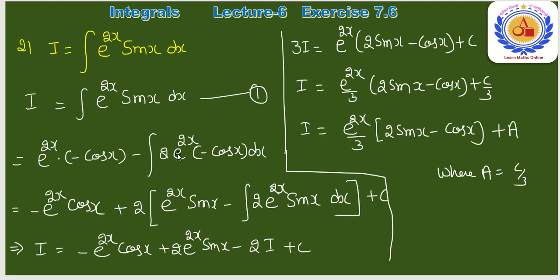I = −e²ˣ·cos x + 2e²ˣ·sin x − 4I। So 5I = e²ˣ·(2 sin x − cos x)। Therefore I = e²ˣ/5·(2 sin x − cos x) + C। यही question number 21 का final answer है।